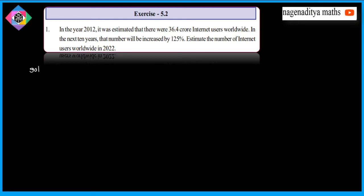Next problem. In the year 2012, it was estimated that there were 36.4 crore internet users worldwide. In the next 10 years, that number will increase by 125%. Estimate the number of internet users worldwide in 2022. The estimated internet users in 2022 = 225/100 × 36.4 crores.